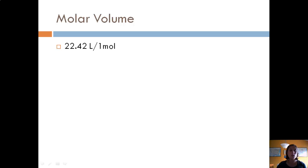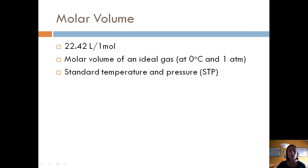Molar volume is 22.42 liters per mole, usually we look at it as 22.4 liters per mole. This is the molar volume of an ideal gas at 0 Celsius and 1 atmosphere, and we call those values standard temperature and pressure, or STP. So anytime a problem says that something occurs at STP, it's 0 Celsius, or 273 Kelvin, and 1 atmosphere.